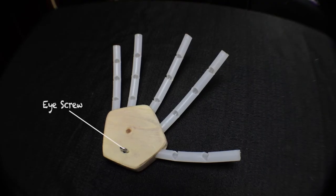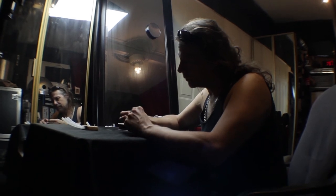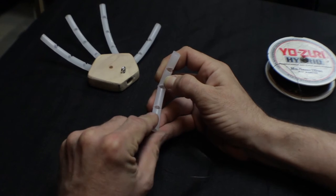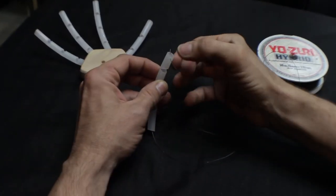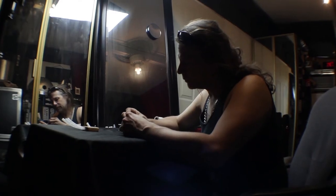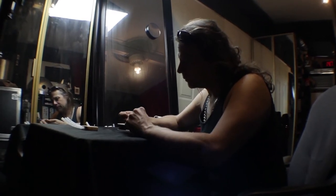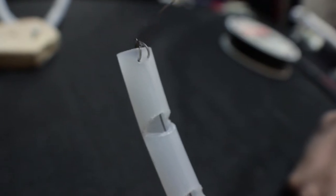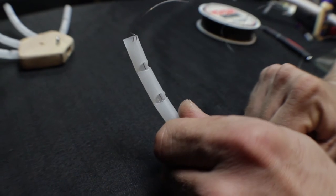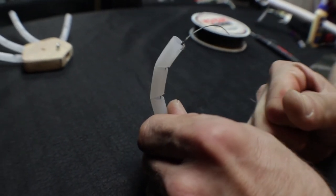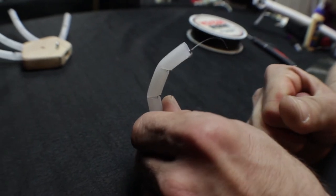Secure an eye screw to the center of the palm, about one inch from the wrist. We'll attach a wire later. Then thread a wire through the hole at the tips of each finger. Tie them off and secure them with hot glue. Test the strength of your knots in the wire by giving a good pull and flex the finger. This will also give an example of the kind of motion that you'll get.